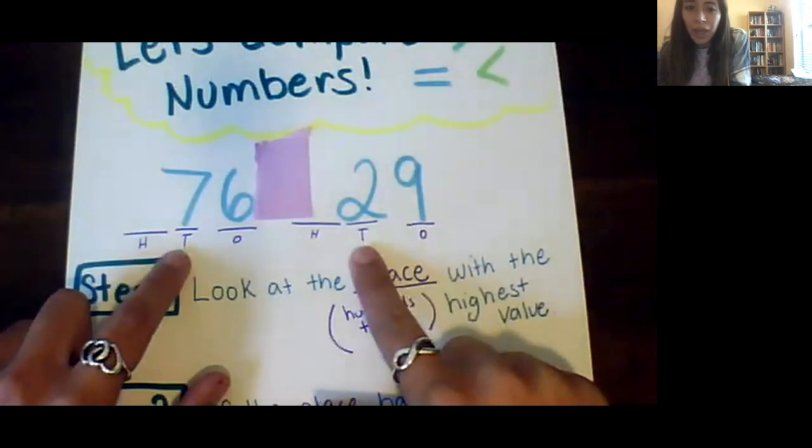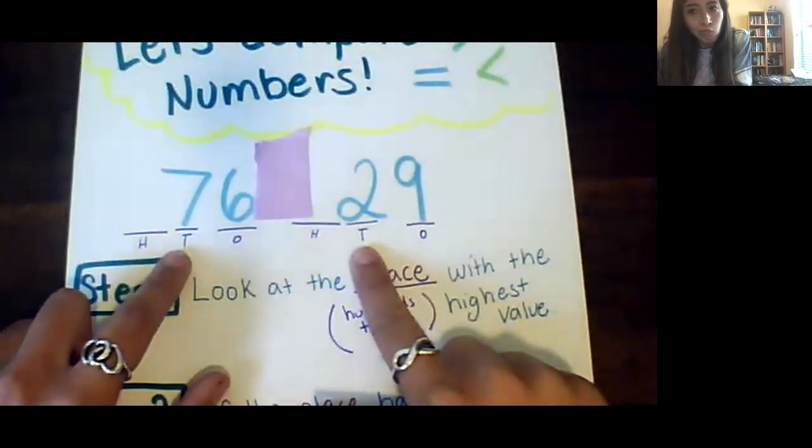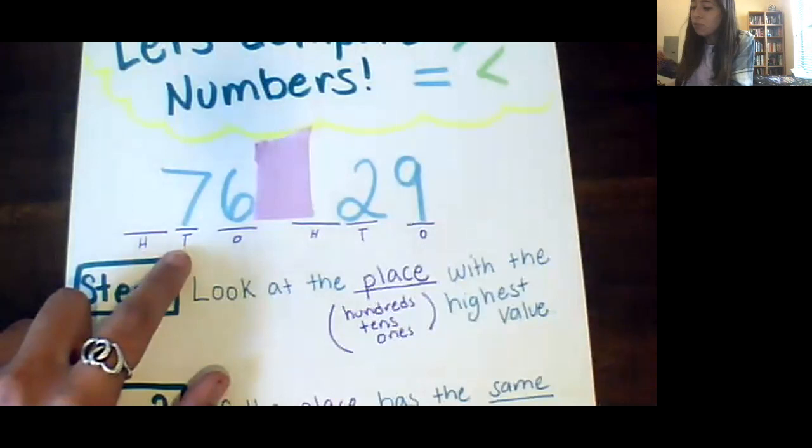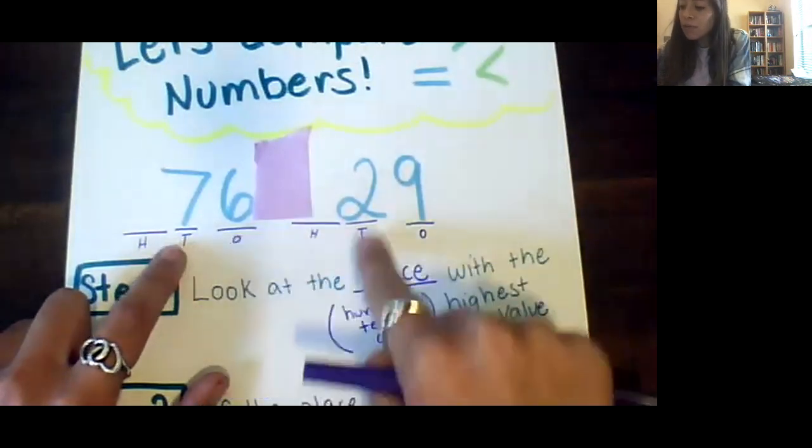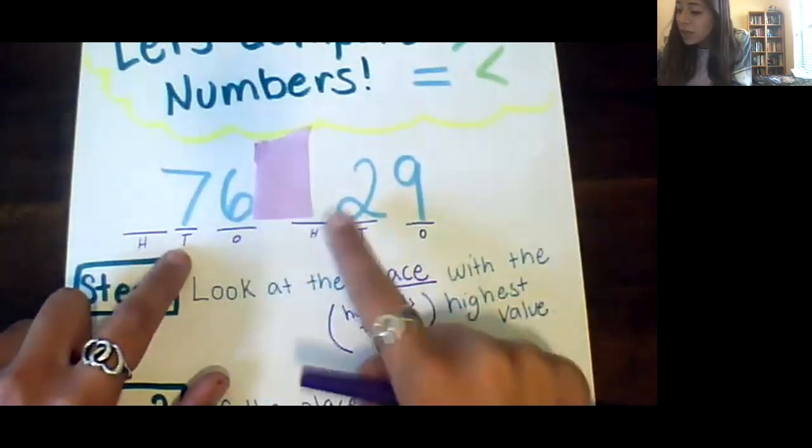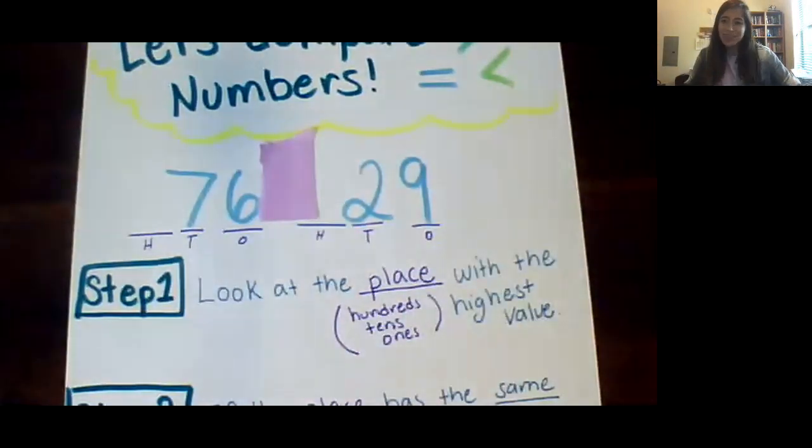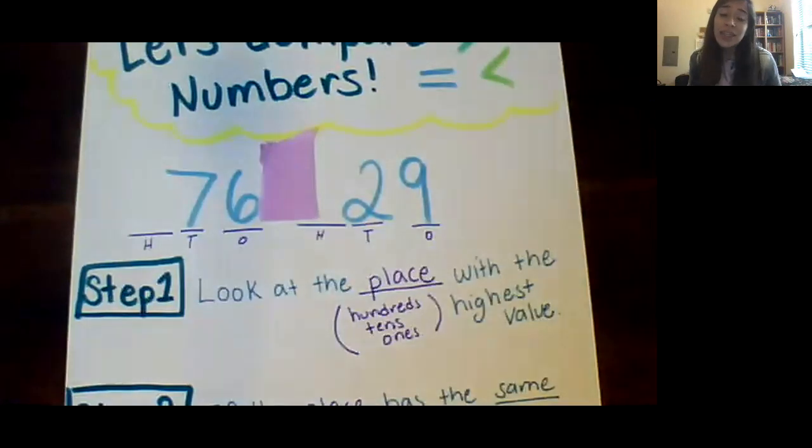Ooh now seven and two are definitely not the same number. So now we can compare. Which is bigger? Seven or two? I'm sure you're thinking the same thing I am. Seven is quite a bit bigger than two which means that 76 must be a higher value number than 29. Now we're in second grade so we can't say that 76 is bigger than 29. We have to use our place value vocabulary. 76 is greater than 29.